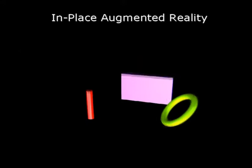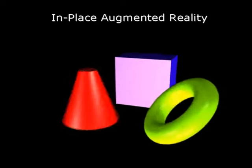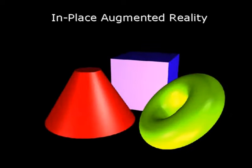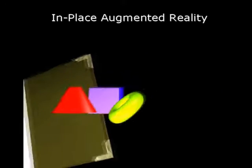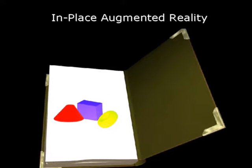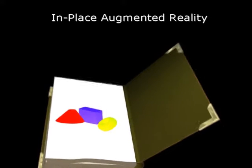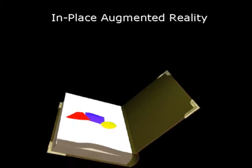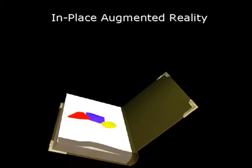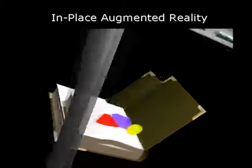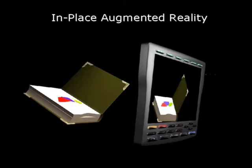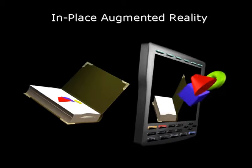In the in-place augmented reality scheme we propose, we embed a 2D, understandable representation of the content into a printed paper. When captured by a viewing device, the virtual models are extracted directly from the incoming image. Let's look at an example.